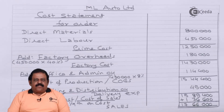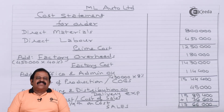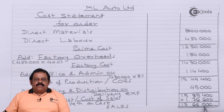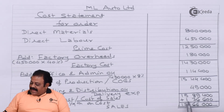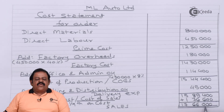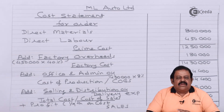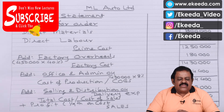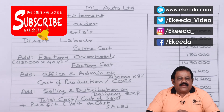We can verify the rate of profit. They said the rate of profit will be 10% on sales. Our sales is 17,66,000; if we take 10% of it, it will be 1,76,600, so the rate of profit is correctly applied. In this question we have learned how to prepare an estimated cost statement based on percentage recovery of overheads. Thanks for watching this video, stay tuned with Ekeeda and subscribe to our channel.